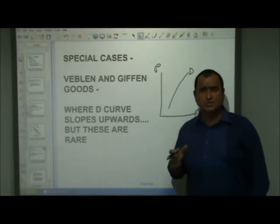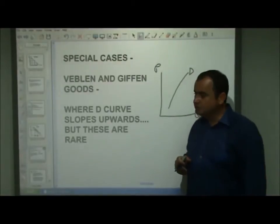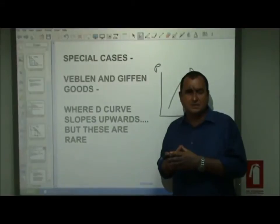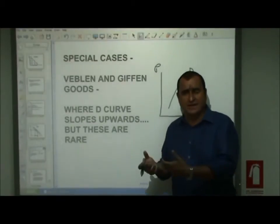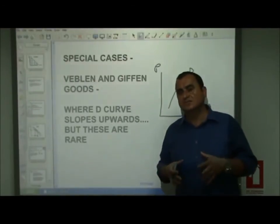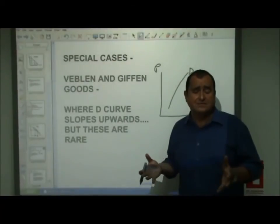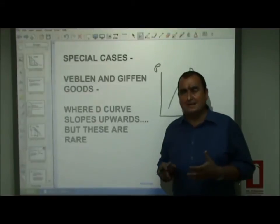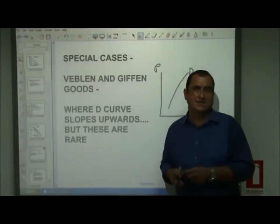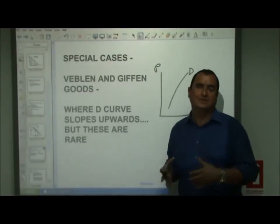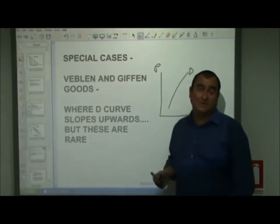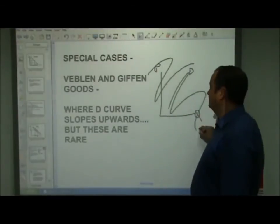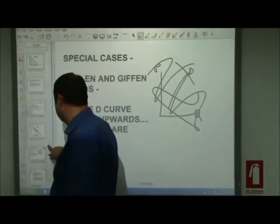Giffen goods are not snob goods — they are very essential goods where, as the price goes up, certain people may reject buying anything else as they devote all their income to purchasing this critical good. Bread has been identified as a possible Giffen good in certain social circumstances. Before the French Revolution, the price of bread in Paris rose and the urban poor apparently started to buy more bread as they rejected all other purchases. However, some economists argue whether Giffen goods even exist at all — these are rare cases of upward-sloping demand curves and not something to worry about.